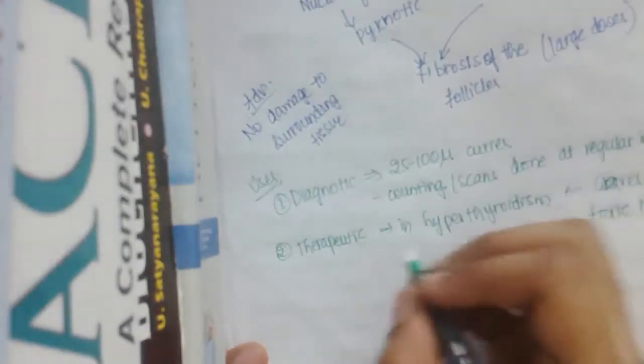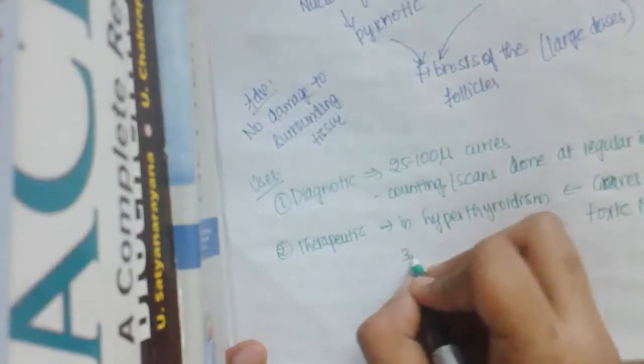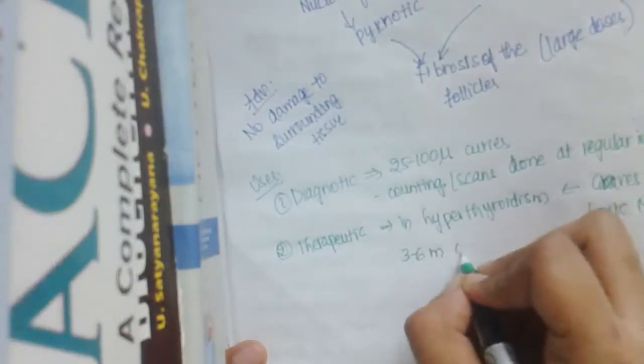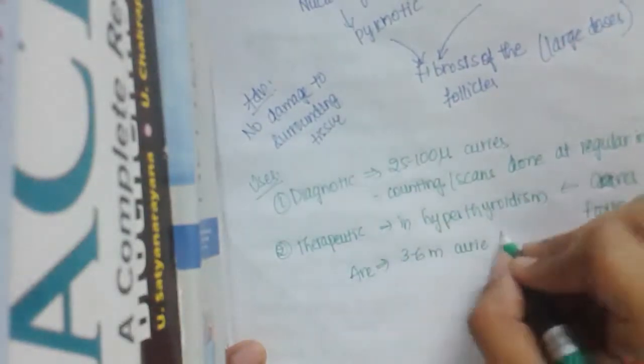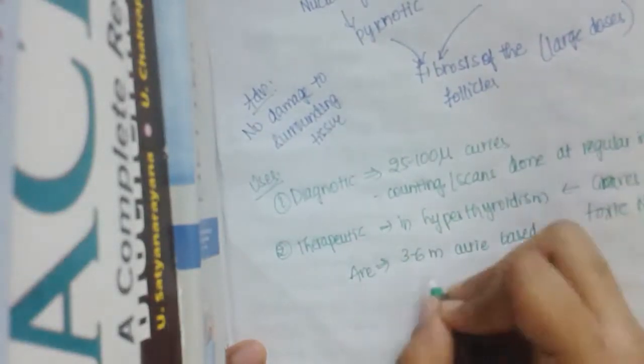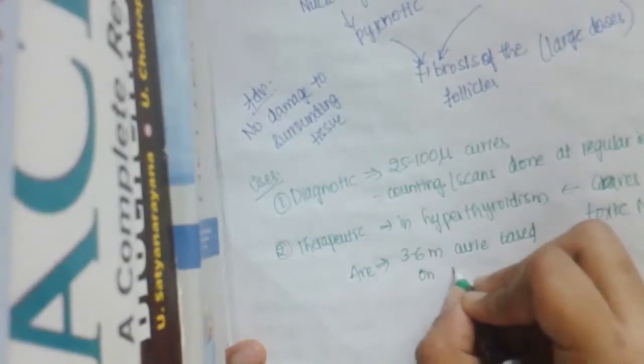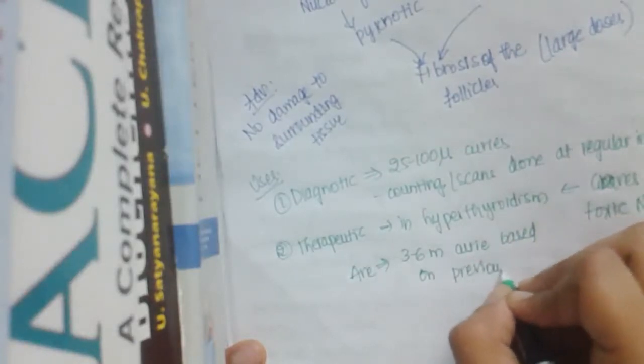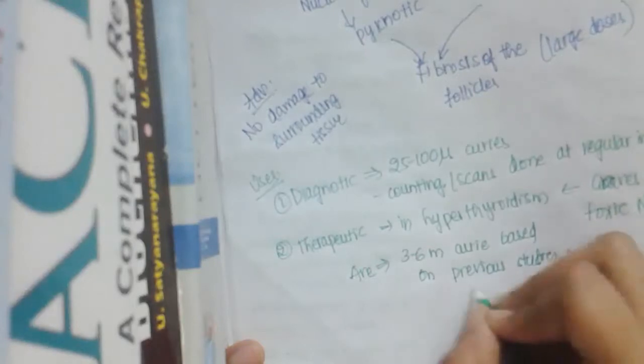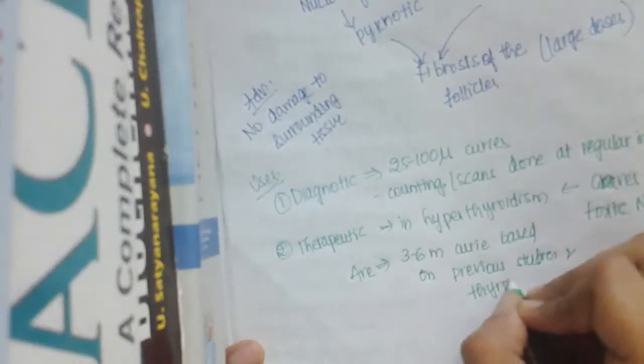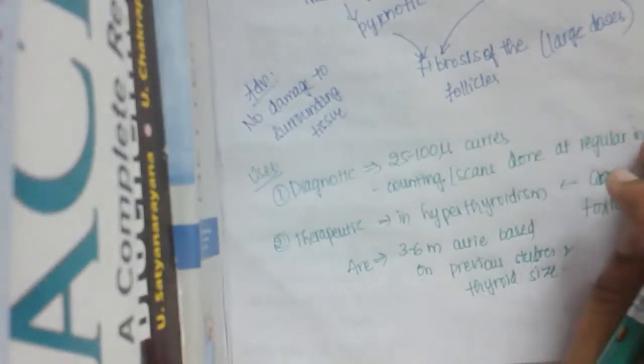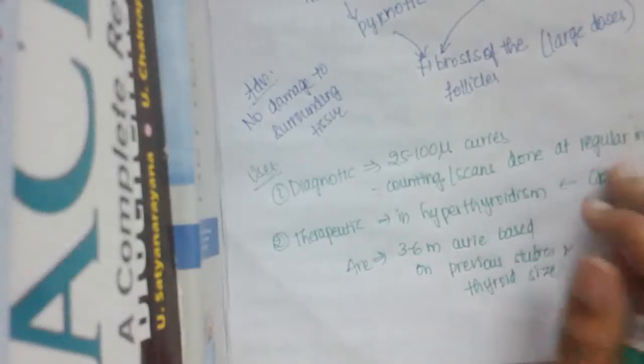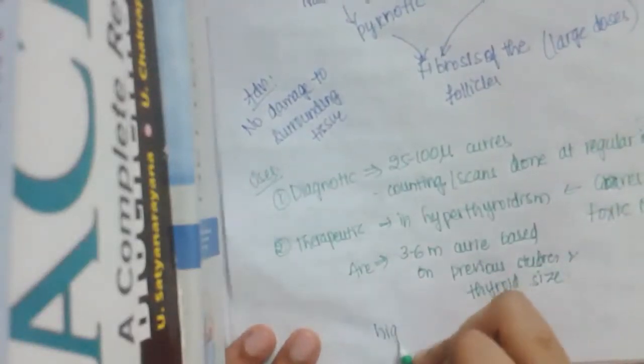Here we give 3 to 6 millicuries average dose based on previous studies and thyroid state.